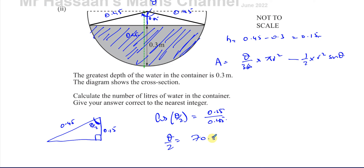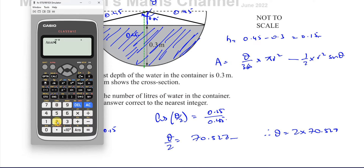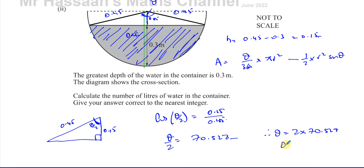Therefore theta equals 2 times 70.528, which gives 141.057 degrees. That is the full angle theta.